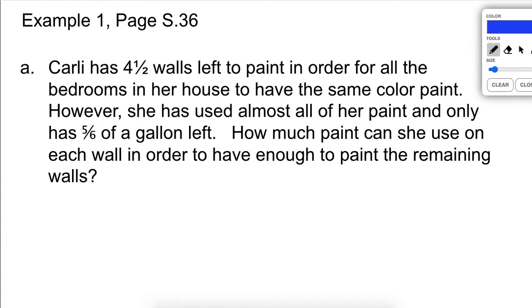Carly has four and one-half walls left to paint in order for all of her bedrooms in her house to have the same color of paint. However, she's used almost all of her paint and only has five-sixths of a gallon left. How much paint can she use on each wall in order to have enough to paint the remaining walls? So go ahead and pause and think about this and see if you can figure it out. That's good practice to do on all these problems. Just at least get yourself thinking about it and see if you can come up with some kind of solution.